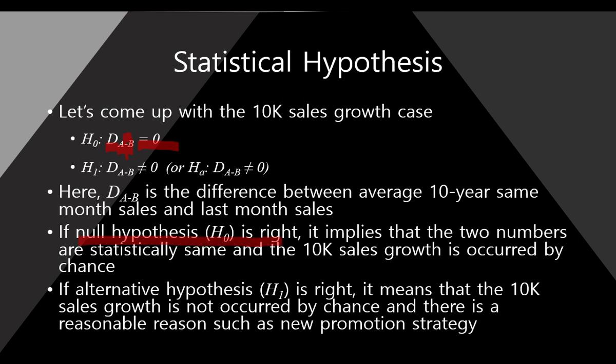If the null hypothesis is right, it means the 10K sales growth occurred just by chance, and the promotion strategy is not effective. Otherwise, if the alternative hypothesis is right, it means that the 10K sales growth is not occurred by chance. So it means there is a reasonable reason — such as a new promotion strategy — and that the new promotion strategy is statistically significant and successful.